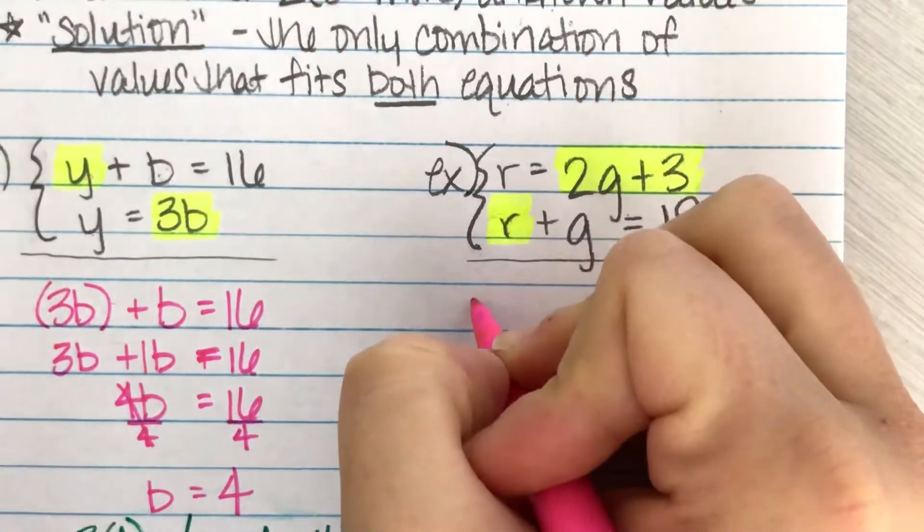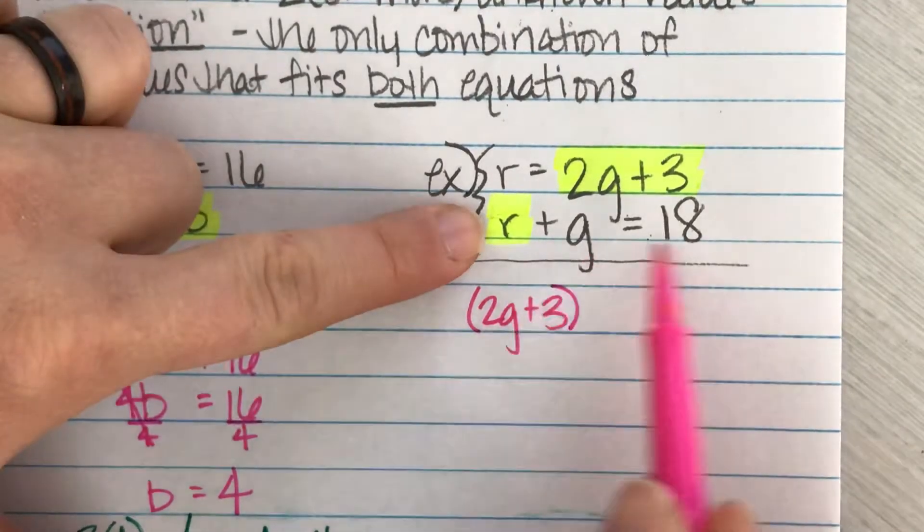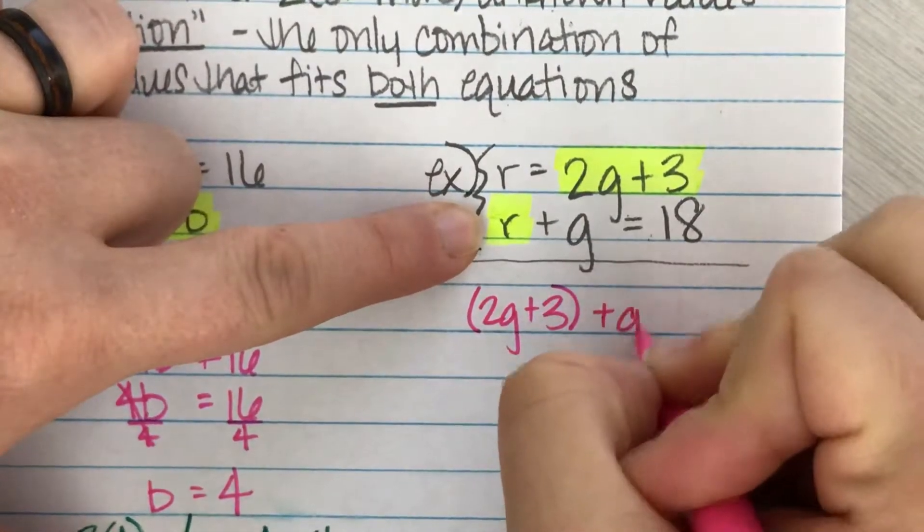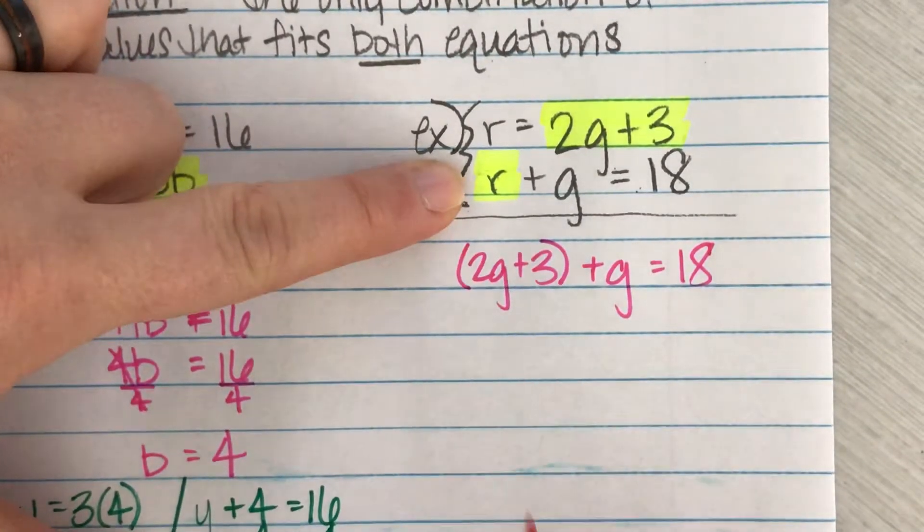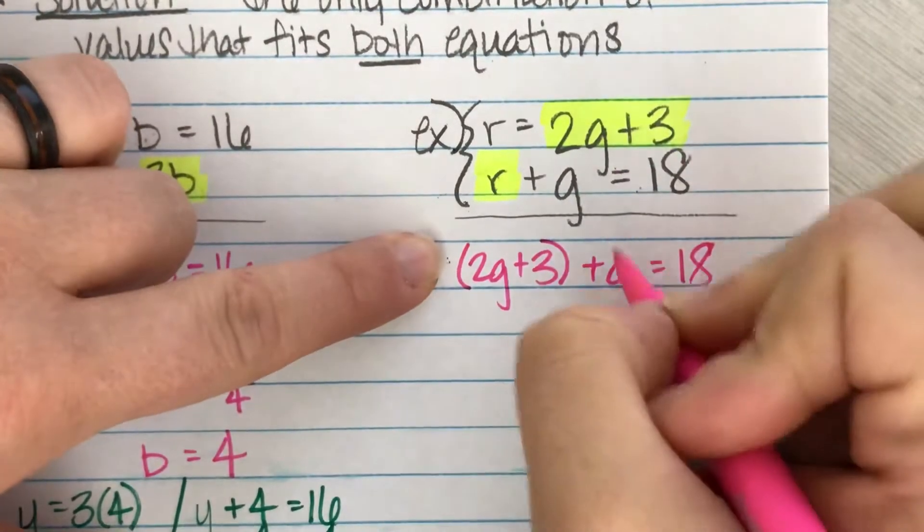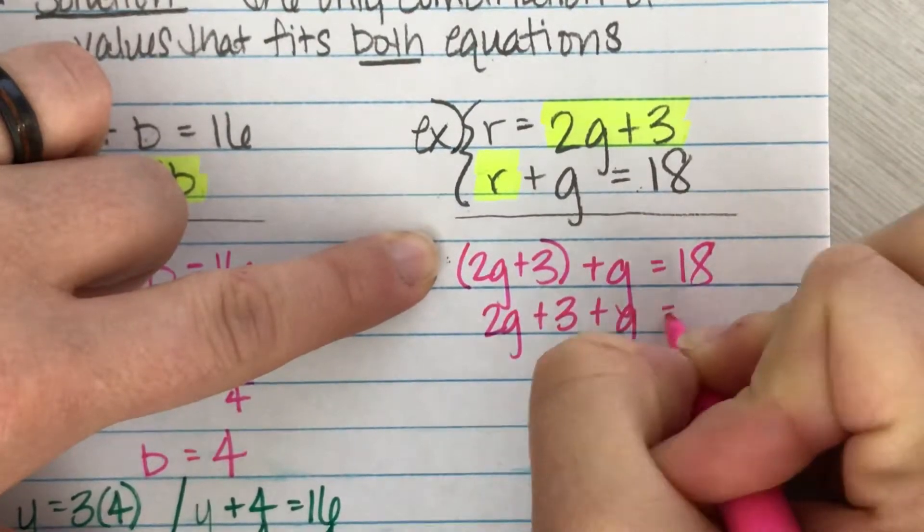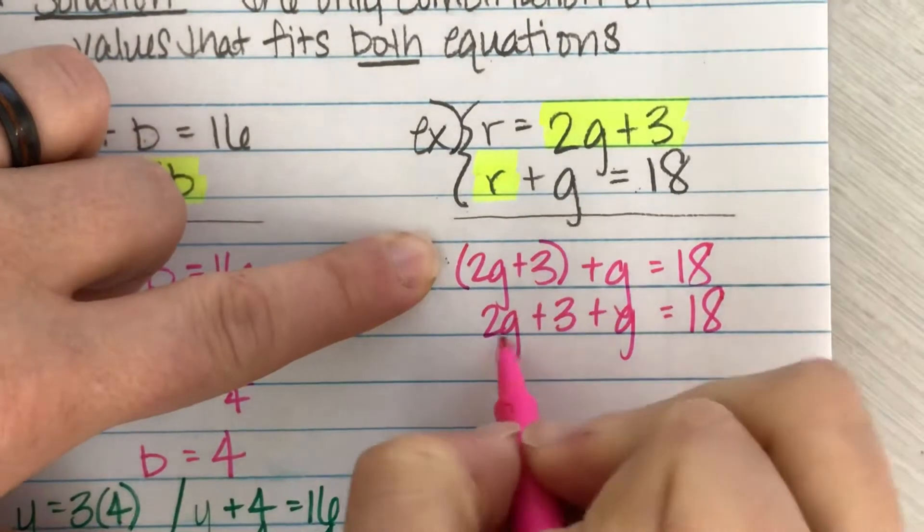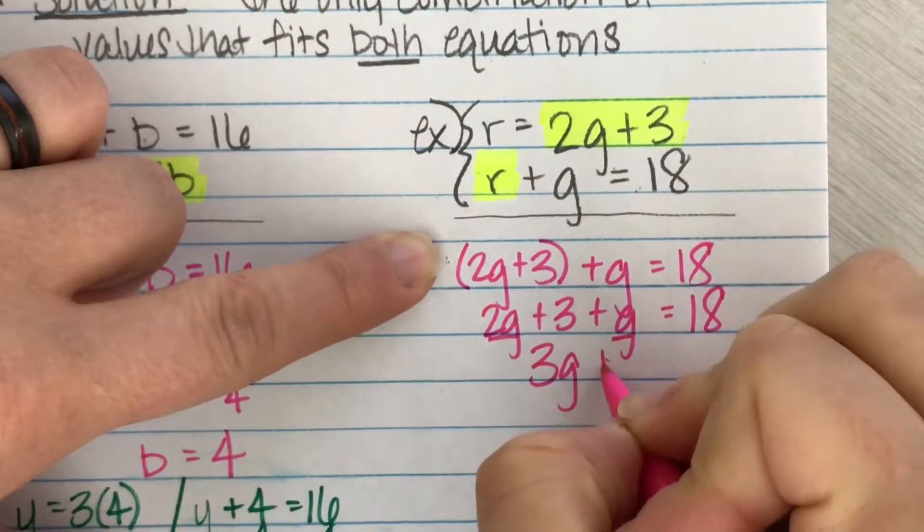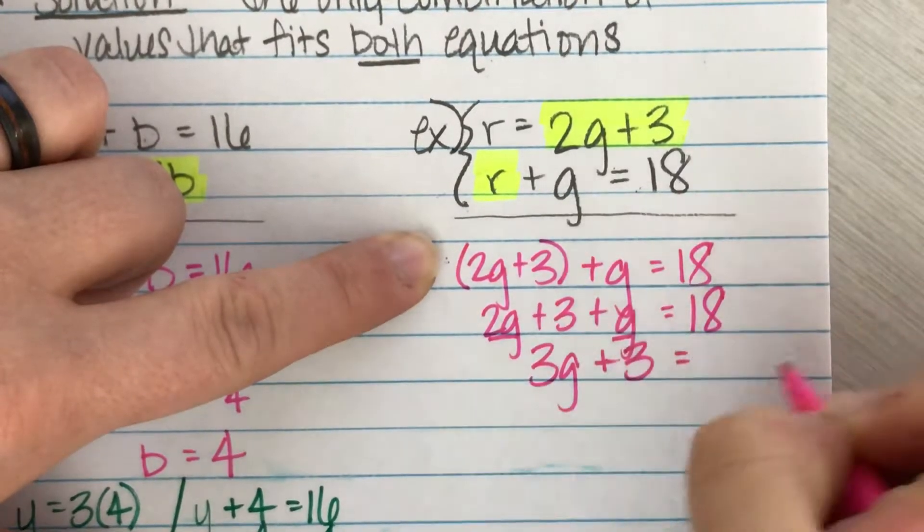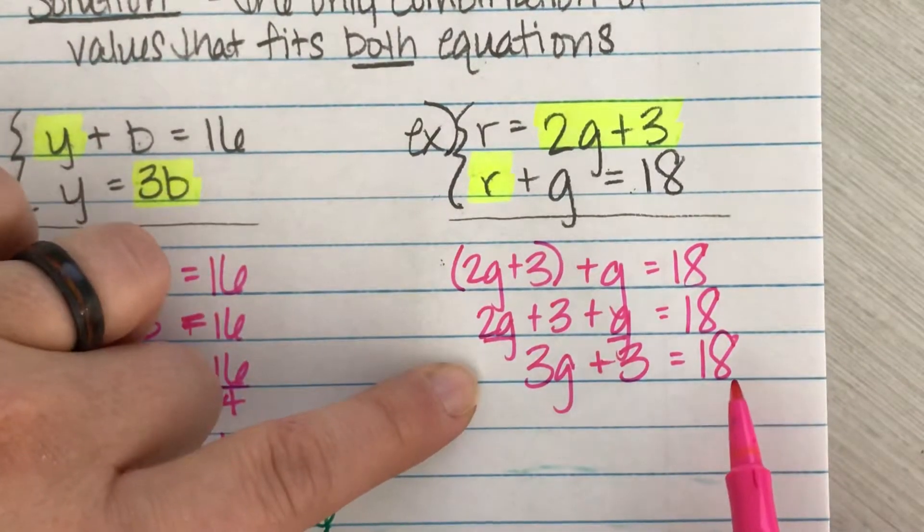I'm just going to write 2g plus three right there instead. So I'm going to plug in 2g plus three in place of r. And now I've got to do the rest of the formula. So plus g equals 18. I don't have any distributing. So I'm just going to ignore these parentheses here. So 2g plus three plus g equals 18. I can go ahead and combine like terms. So 2g plus g is 3g. That plus three is still hanging out out there by itself. And it all has to equal 18.